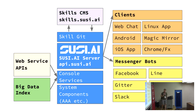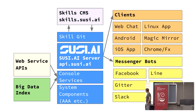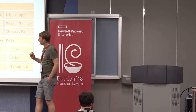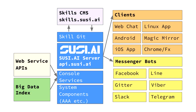What components do we have? On the left are external services — web service APIs and big data indexes. Then we have the SUSI AI server, accessible at api.susi.ai, which returns JSON output. The server includes underlying git, console services, system components, authentication, and authorization.